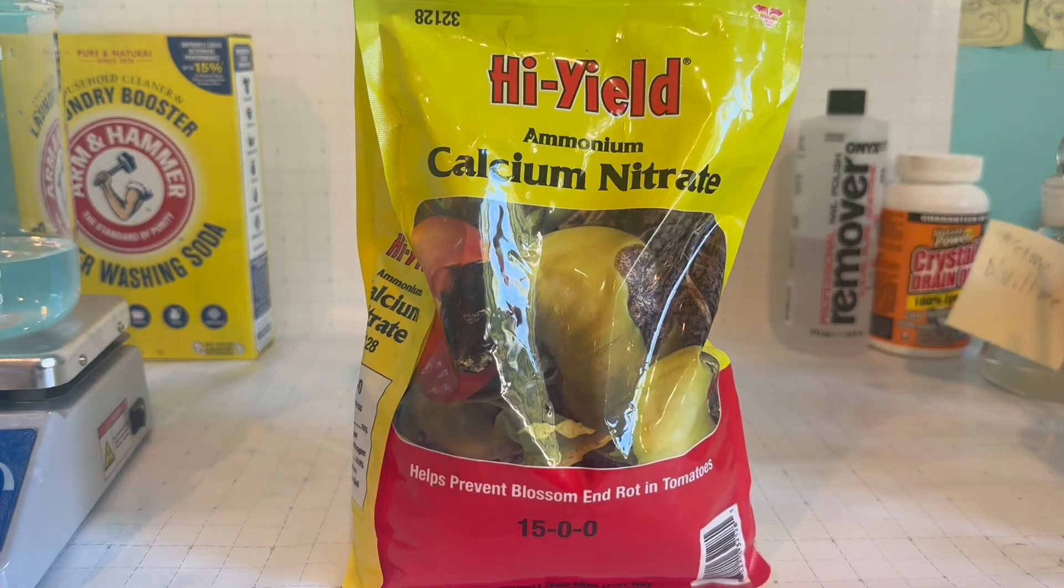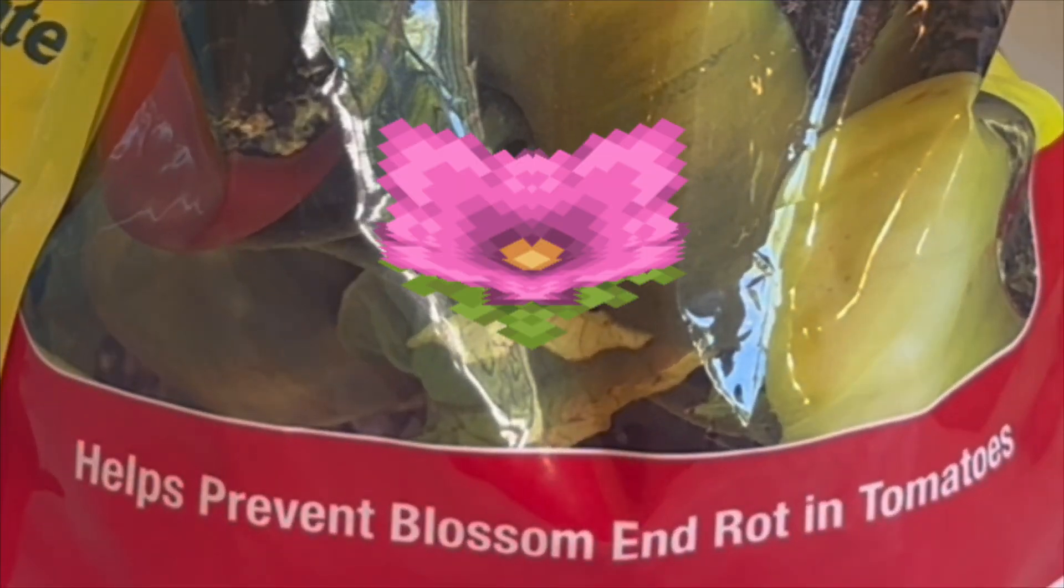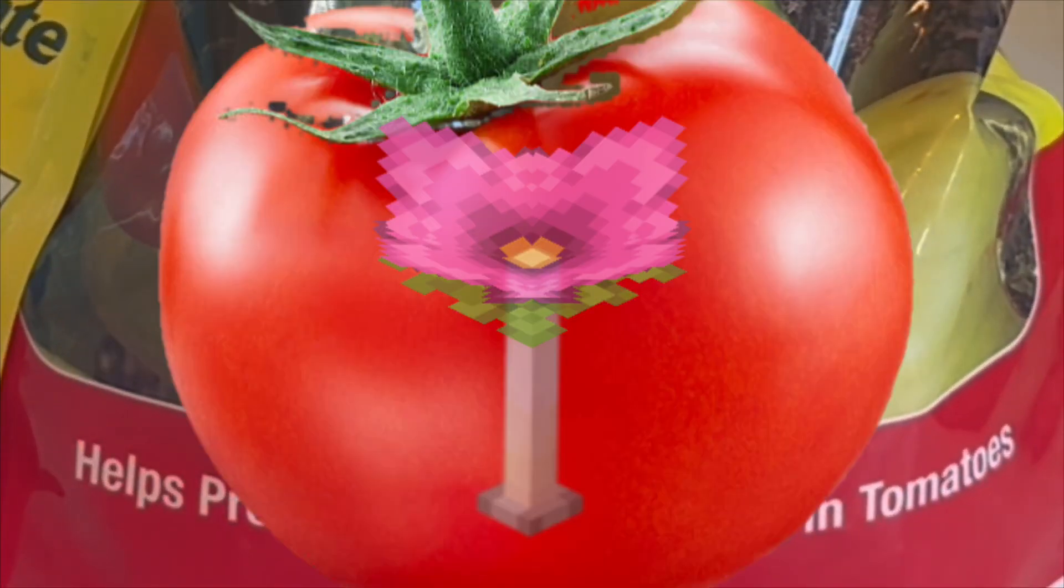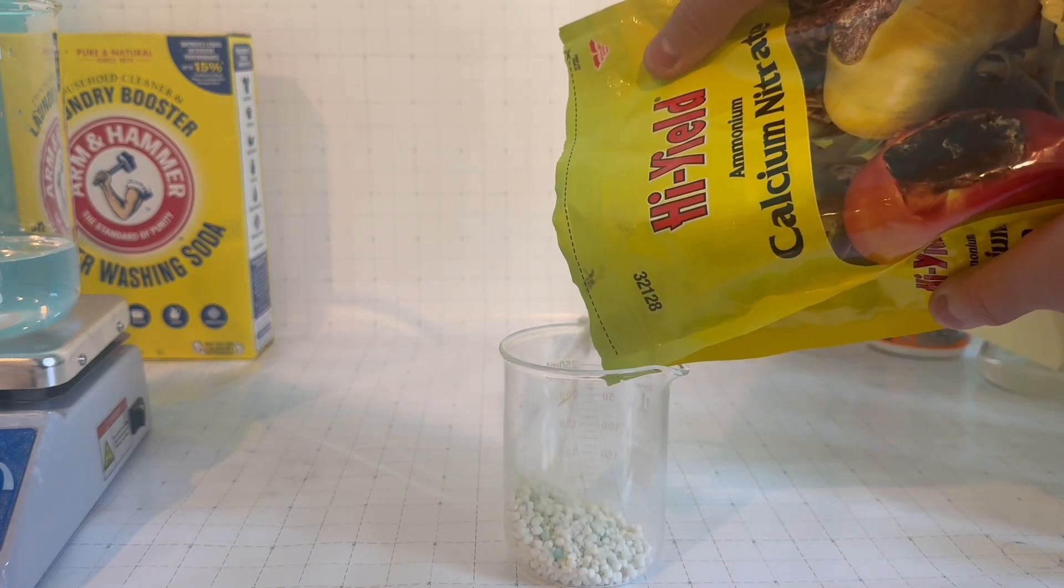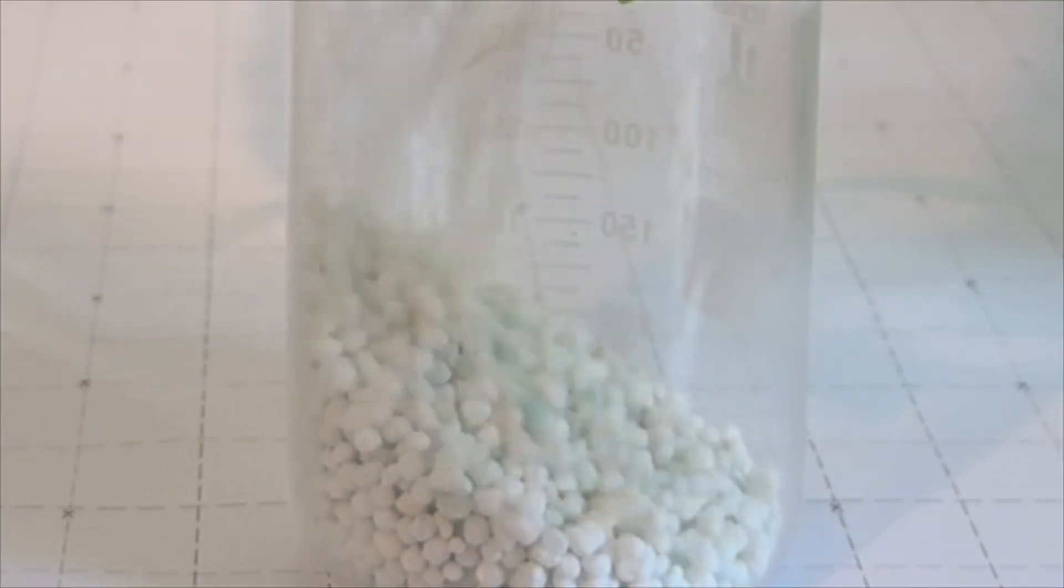For my fertilizer, I used this brand that apparently prevented blossoming end rots in tomatoes. However, the first problem arises when I pour out the fertilizer, as it contains many weird blue bits that are clearly impurities.